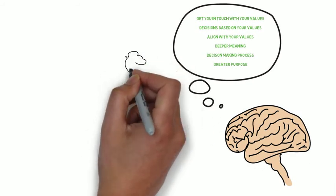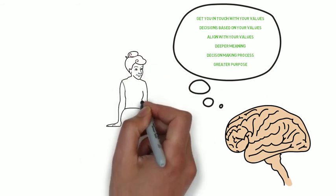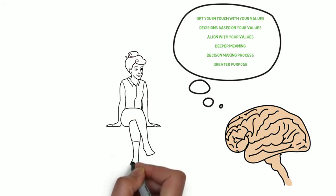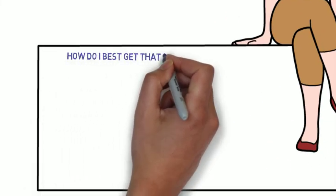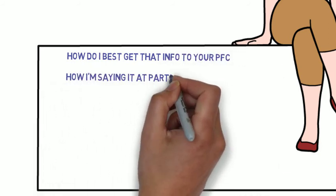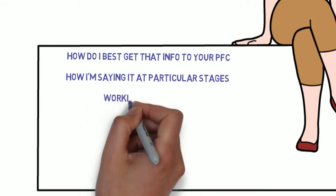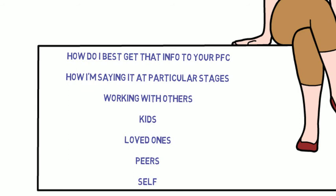This is a really interesting space, and it's a really good concept to get into your prefrontal cortex. Now, this works in many ways. Number one, it's about how we sell information to people, and I'm selling information to you, so I have to look at how do I best get that information to your prefrontal cortex. It's not about what I'm saying, it's how I'm saying it at particular stages. This is also relevant to when we're working with other people, when we're talking to our kids, our loved ones, our peers, and even talking to ourselves.